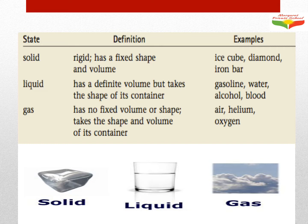What is a liquid? A liquid has a definite volume but it takes the shape of the container. The volume is fixed — it is definite — but the shape will change according to which container you put your liquid in. For example, alcohol, gasoline, water, and blood are all liquids, and the shape changes based on the container.